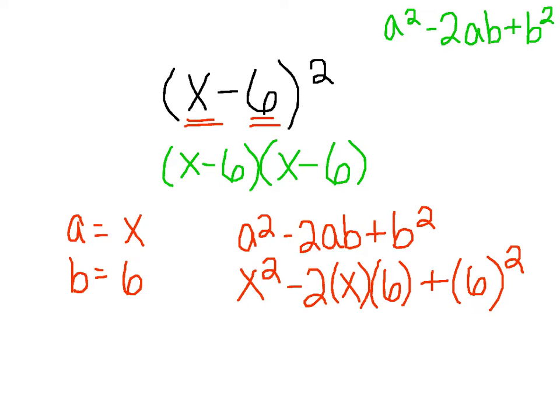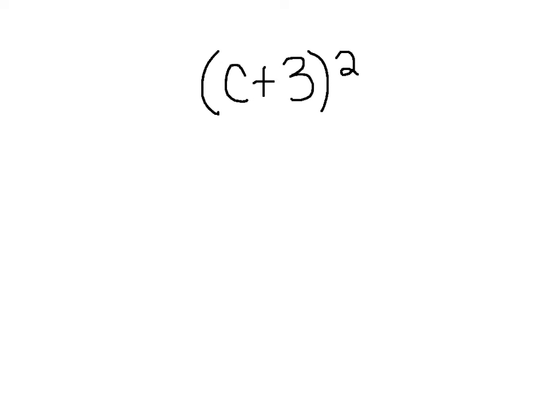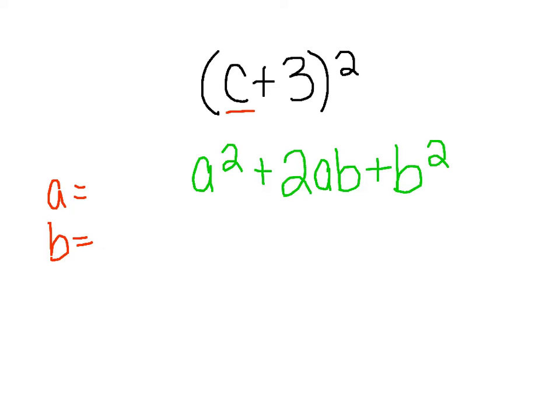We can't simplify x squared at all, so we're going to leave that by itself. We have x squared minus 2 times 6 is 12, so 12x, plus 6 squared is 36. And there's my final answer. Looking at another problem, we have c plus 3 squared. This is our square of a sum because of the plus sign. So we're using the formula a squared plus 2ab plus b squared.